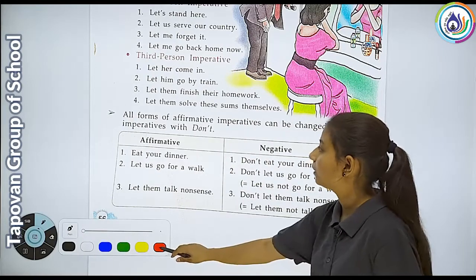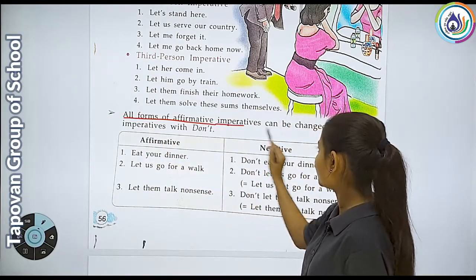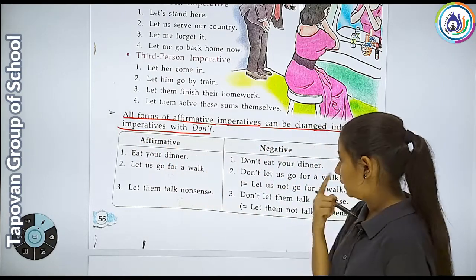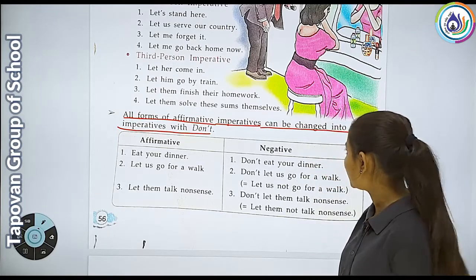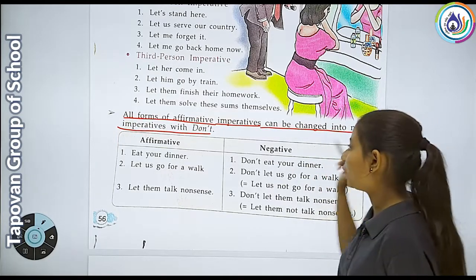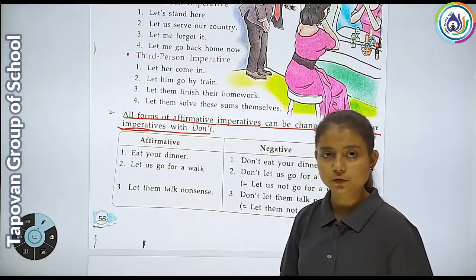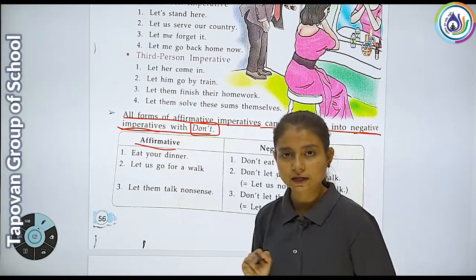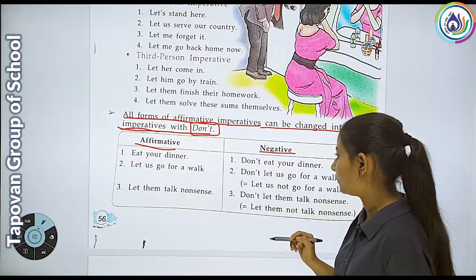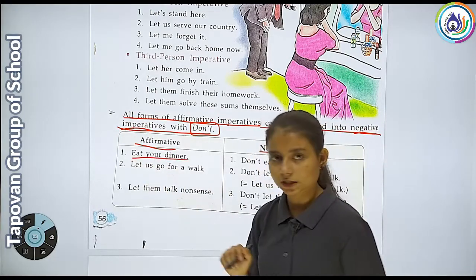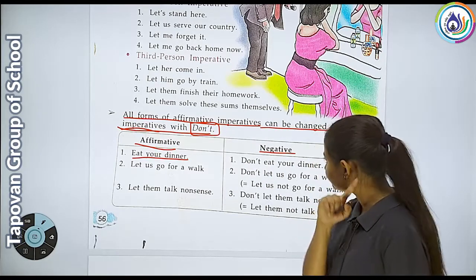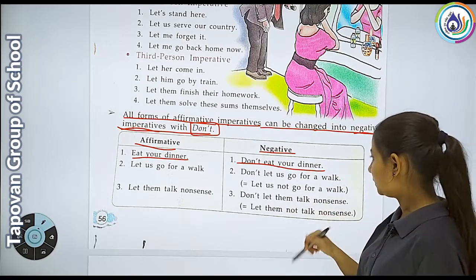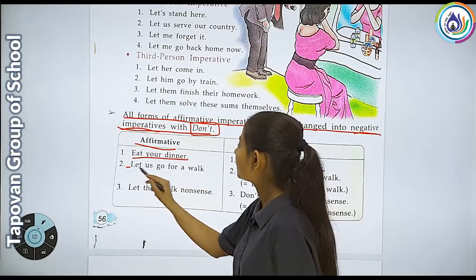All forms of affirmative imperatives can be changed into negative imperatives with 'don't'. Jo bhi imperative sentence hai, hum use negative imperative sentence mein change karenge. Don't ka use karke negative banaenge. Affirmative ka matlab hai sakaratmak, negative ka matlab hai nakaratmak. Jaise ki: 'Eat your dinner' - raat ka khaana khao becomes 'Don't eat your dinner' - khaana mat khao.